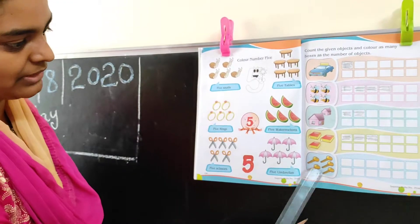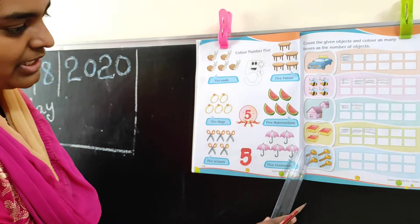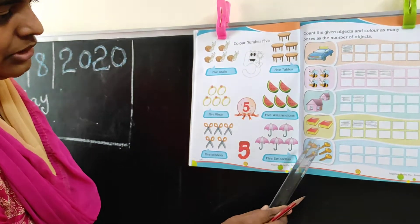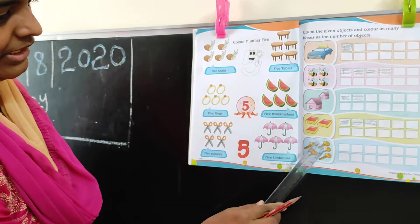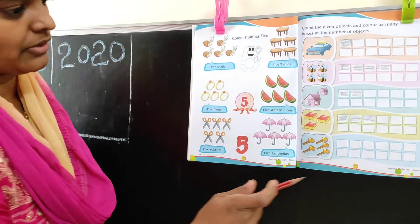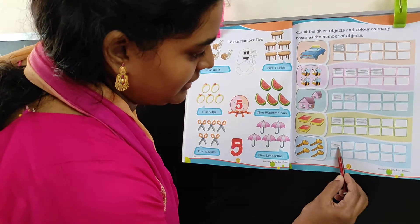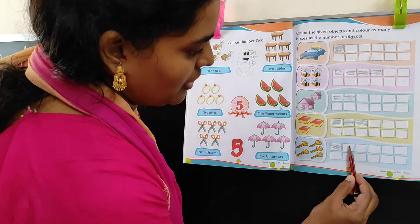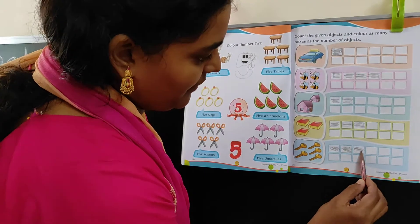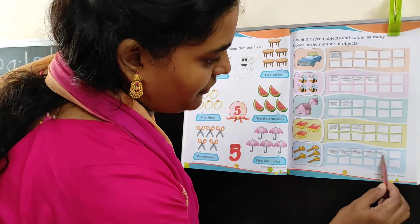Next one. What is this? Key. How many keys are there? One, two, three, four, and five. So you color five boxes. One, two, three, four, five.